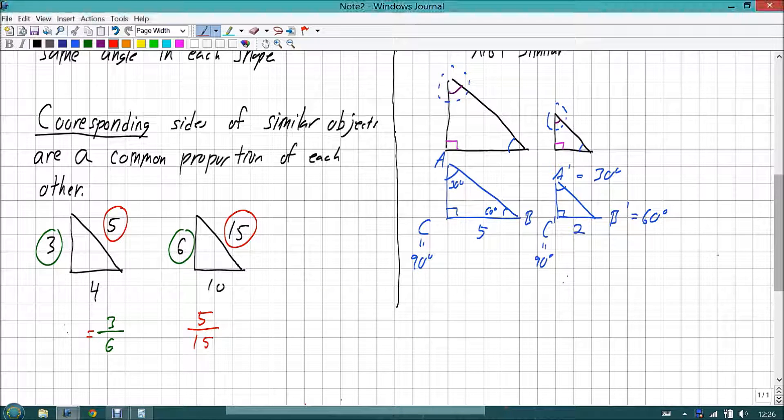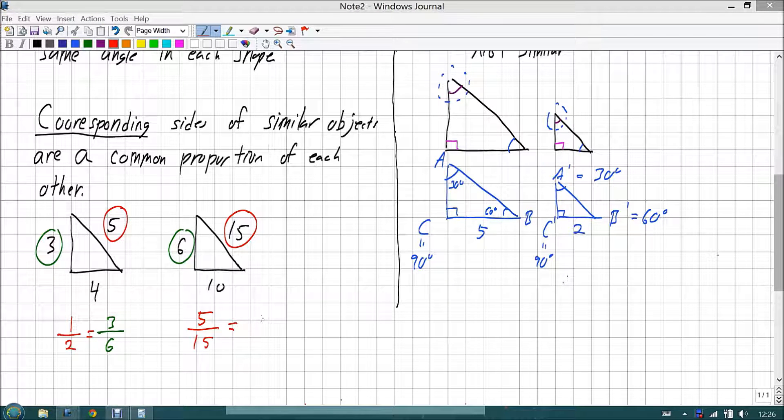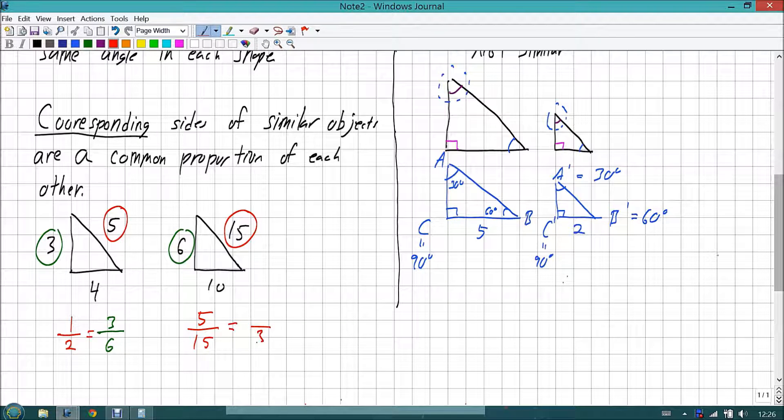By the way, what is 3 to 6? 3 divided by 6 is 1 half, right? And then 5 over 15, they're both divisible by 5, would give us 1 third. Is 1 half equal to 1 third? No. So these would be not similar.